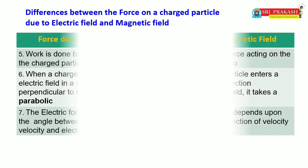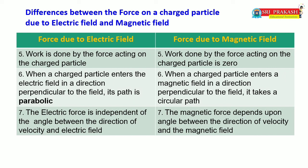Fifth point: work is done by the force acting on a charged particle in an electric field, because the particle moves in the direction of the force. But in magnetic field, work done by the force acting on the charged particle is zero, because the magnetic force is always perpendicular to the velocity of the charged particle. Since displacement and force vectors are perpendicular, work done equals zero.